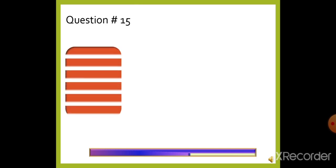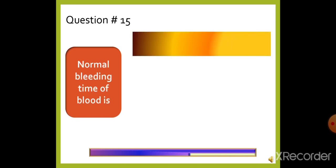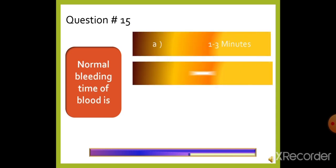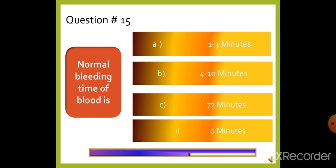Question 15: Normal bleeding time of blood is — option A: 1 to 3 minutes, option B: 4 to 10 minutes, option C: 72 minutes, or option D: 100 minutes. The right answer is option A, 1 to 3 minutes.